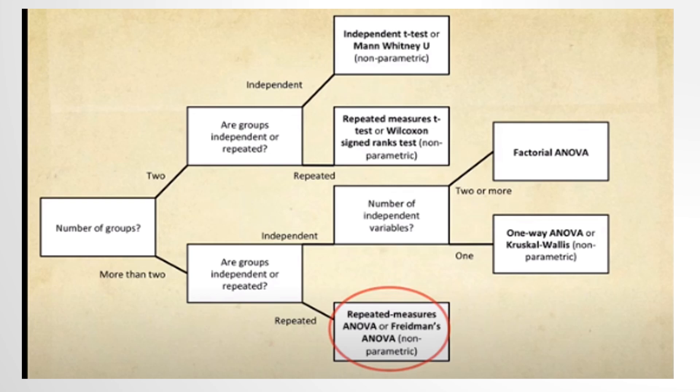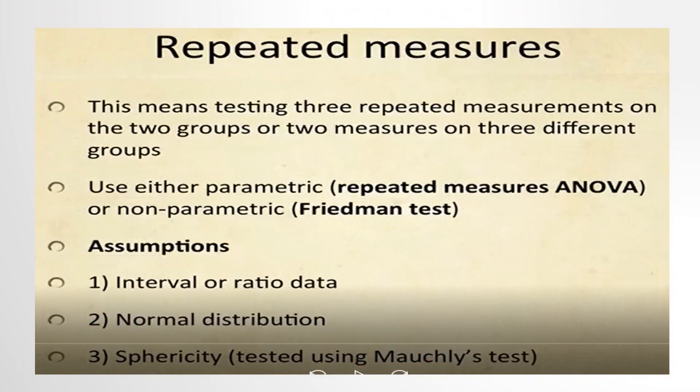If there are more than two groups and the measurements are repeated, use repeated measures ANOVA for parametric data or Friedman's test for non-parametric. This means testing three repeated measurements on two groups, or two measures on three different groups. Assumptions include interval or ratio data, normal distribution, and sphericity tested using Mauchly's test.